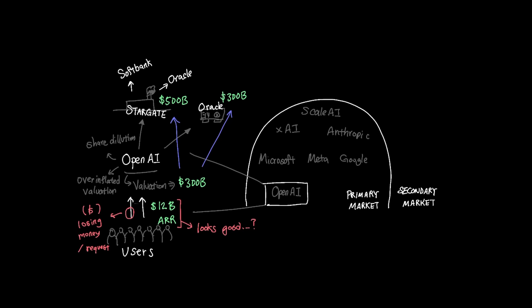While not on the same extent as OpenAI, other AI companies also have similar sentiment. ScaleAI is valued at $29 billion with $1.5 billion annual recurring revenue. XAI is valued at $75 billion while they're believed to be losing $1 billion each month.